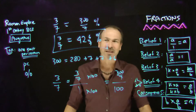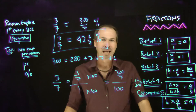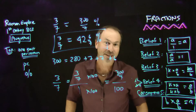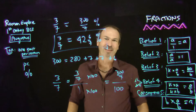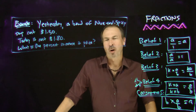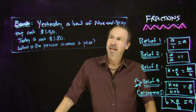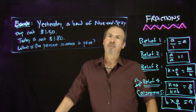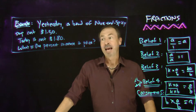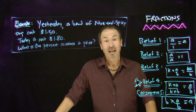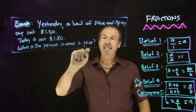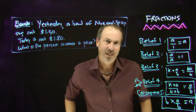Let me do some typical examples of how percentages appear in textbook problems in life. Yesterday, a bowl of nice and spicy soup cost $1.50. Today, it costs $1.80. The price went up. What is the percent increase in the price?